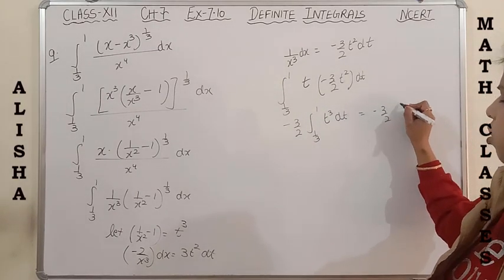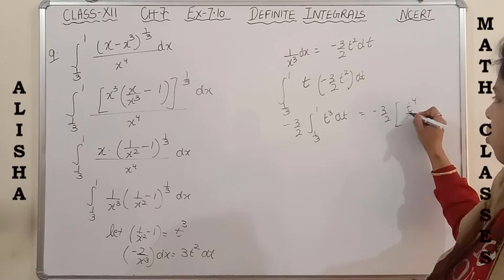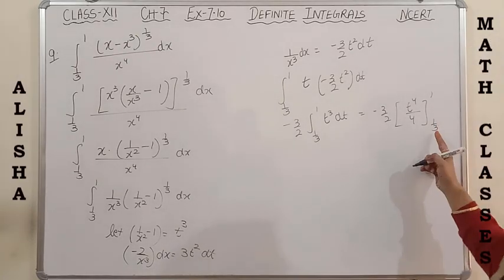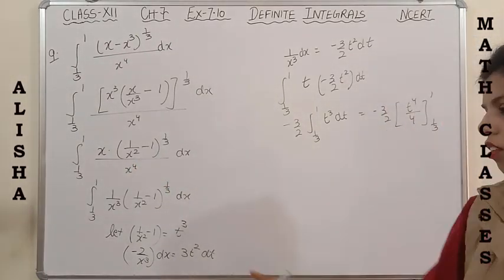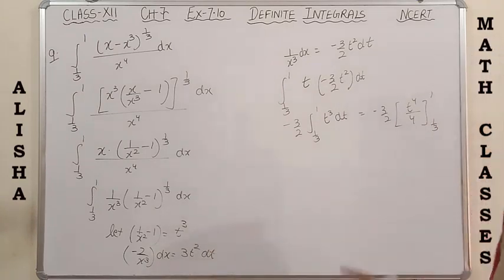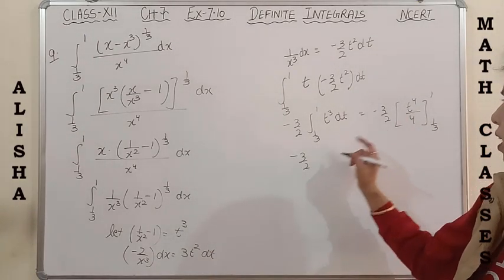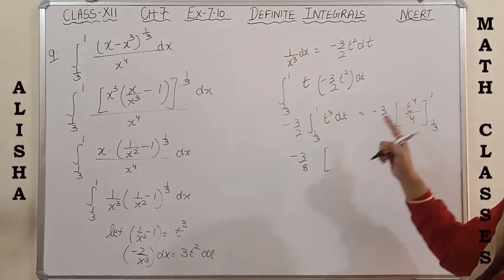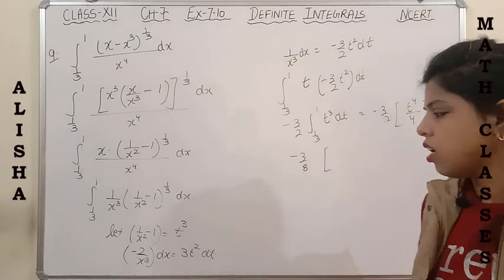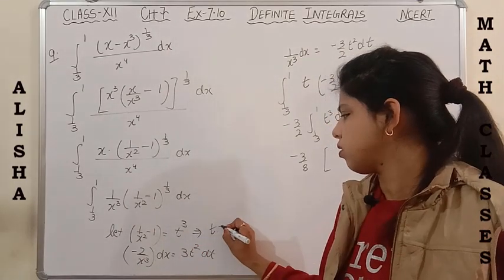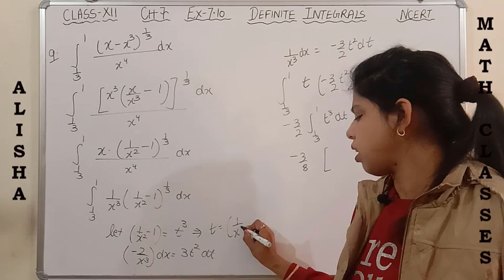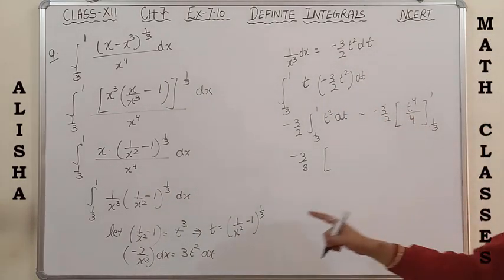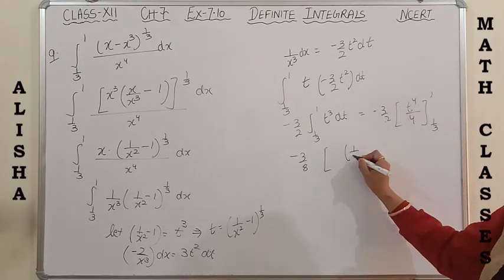The integral of t³ is t^4/4. Since the limits were in terms of x and I haven't changed them, I replace t back: t = (1/x² - 1)^(1/3), so with the constant outside, it becomes -3/8 × (1/x² - 1)^(4/3) with original x-limits.